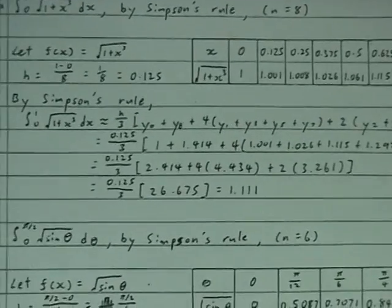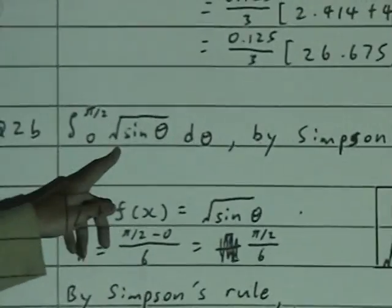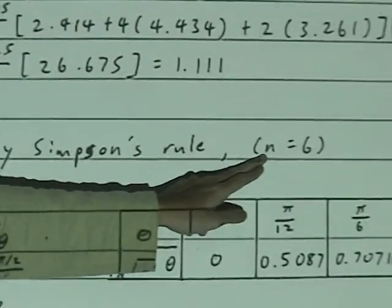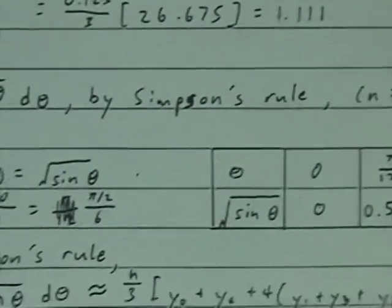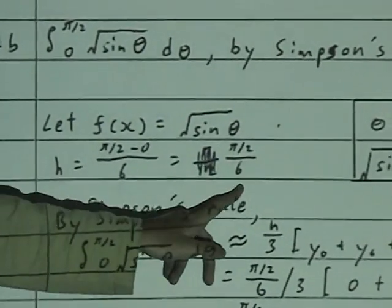Same goes for question b. You are given this equation and also n. Then you find h, b minus a over n, you get h.